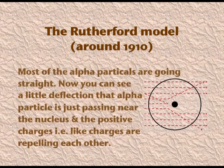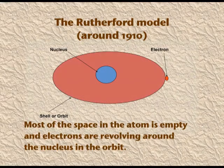You can see that most alpha particles are going straight. A little deflection occurs when an alpha particle passes near the nucleus — the positive charges, being like charges, repel each other. By these observations, Rutherford concluded that the mass of the atom is concentrated in the centre, which he named the nucleus. Most of the space in the atom is empty, and electrons are revolving around the nucleus in orbits.